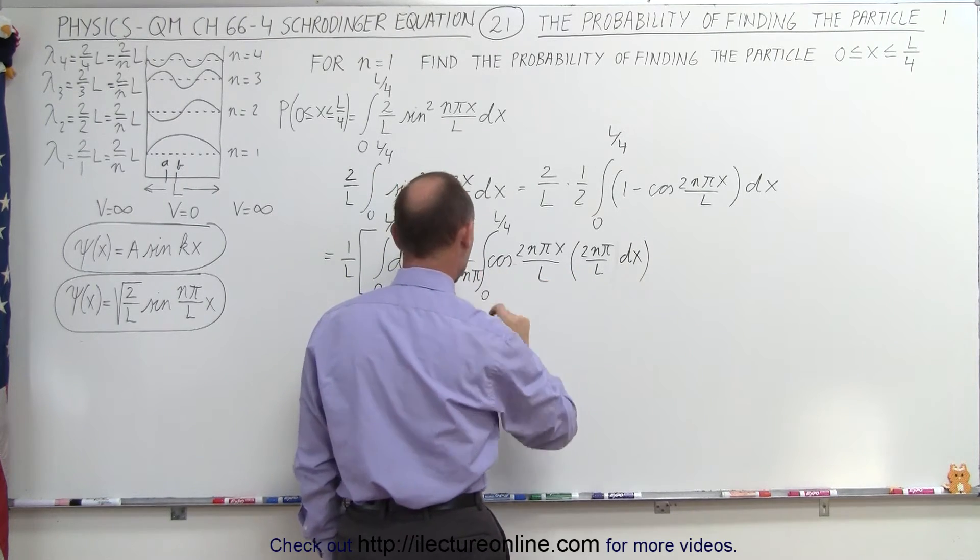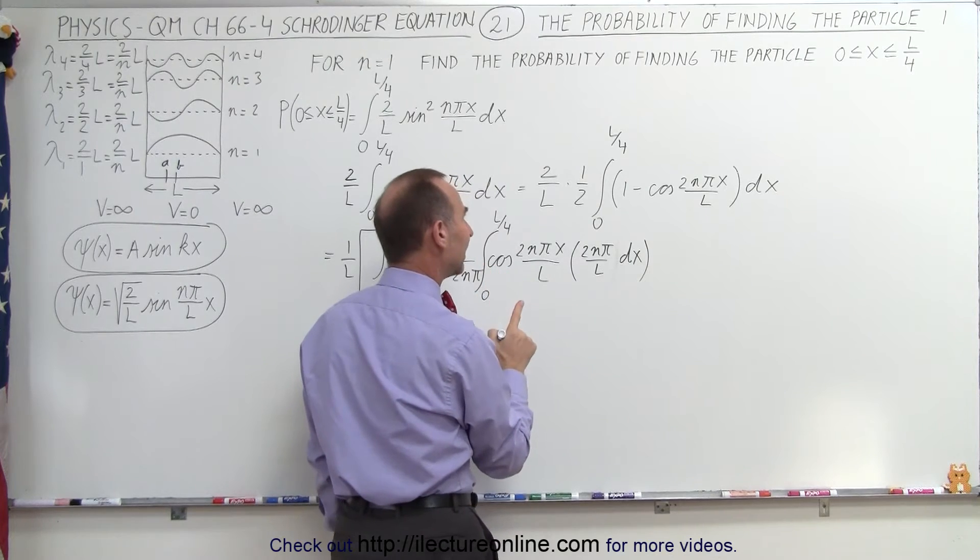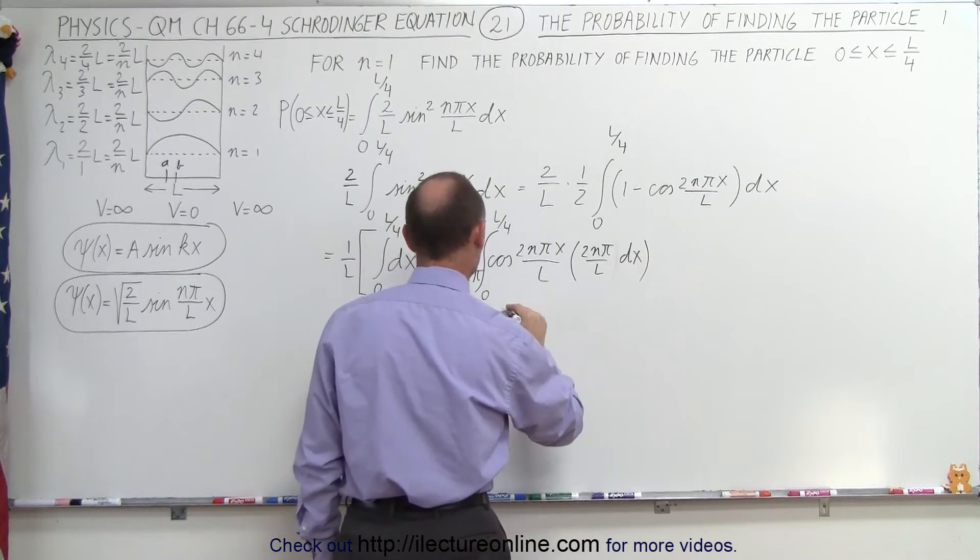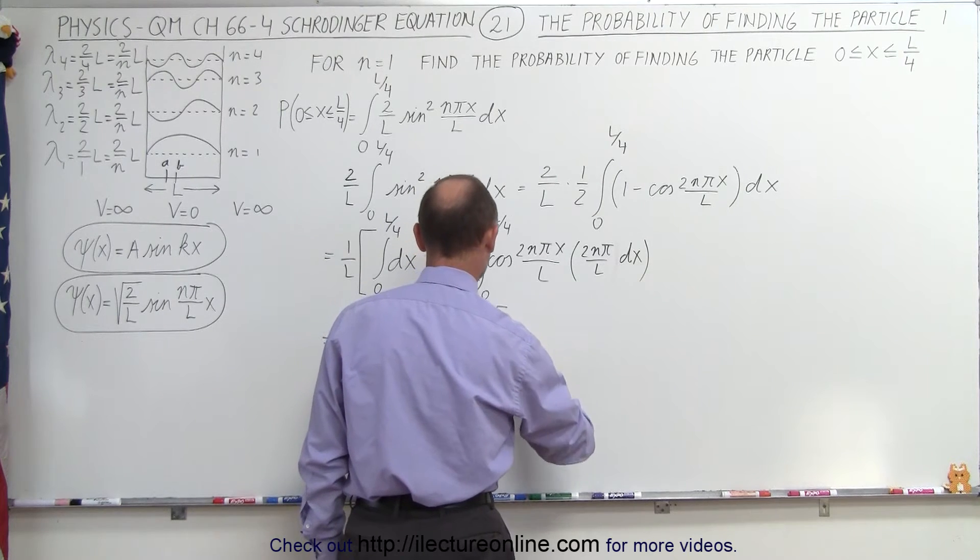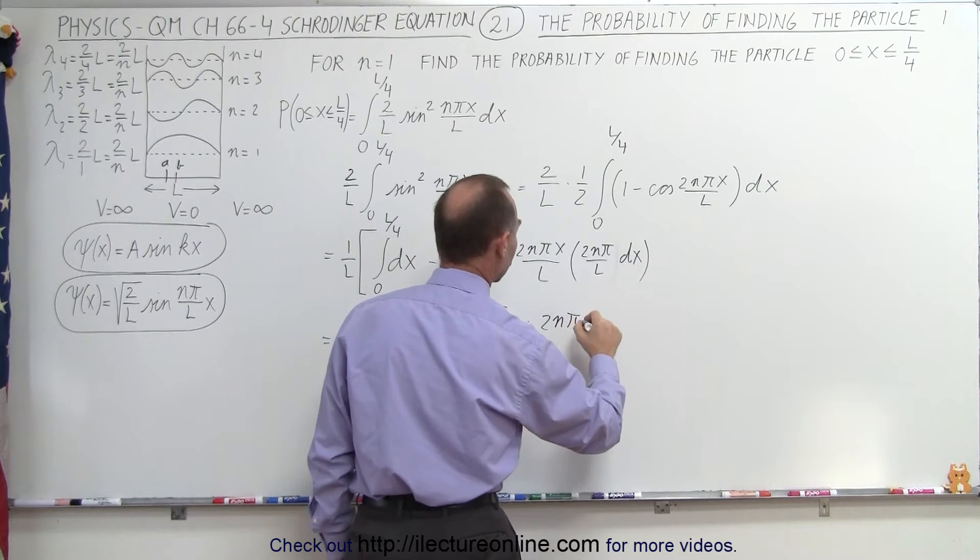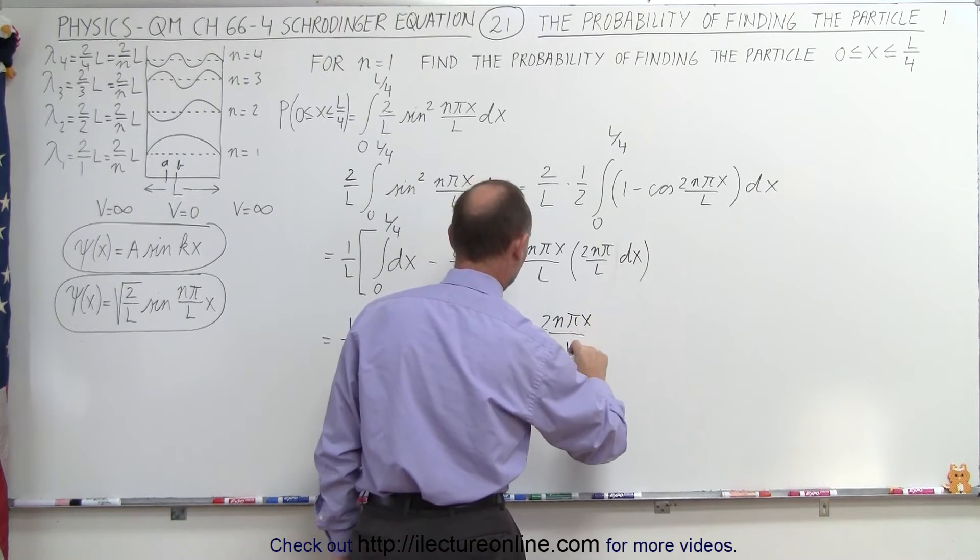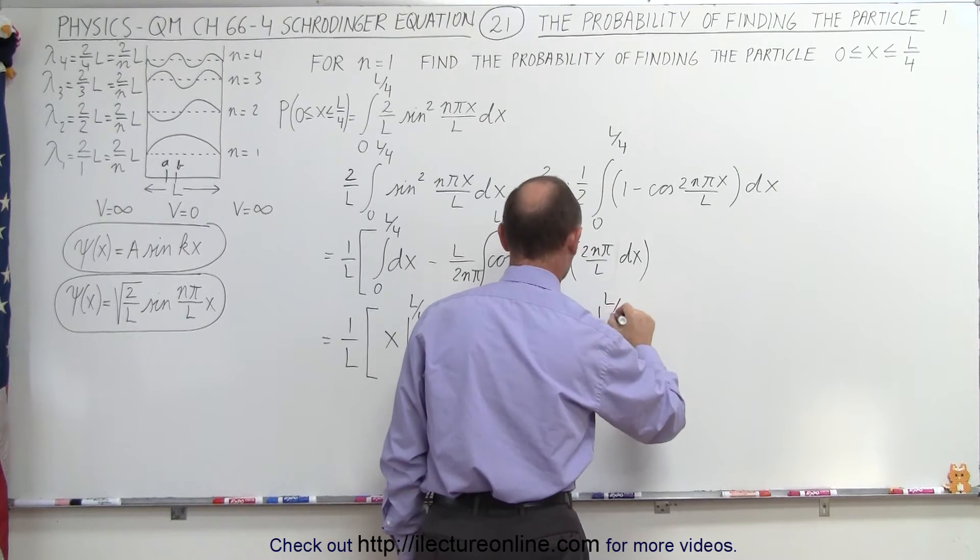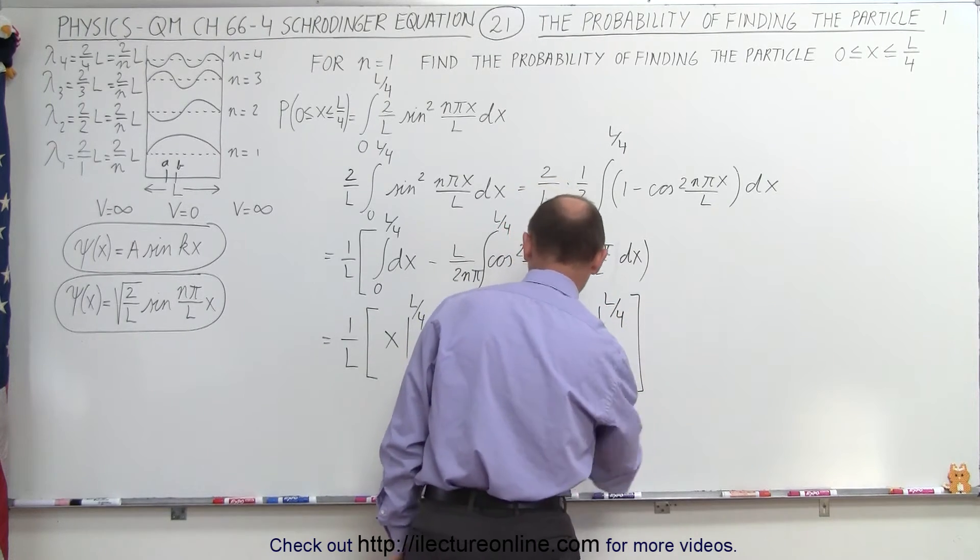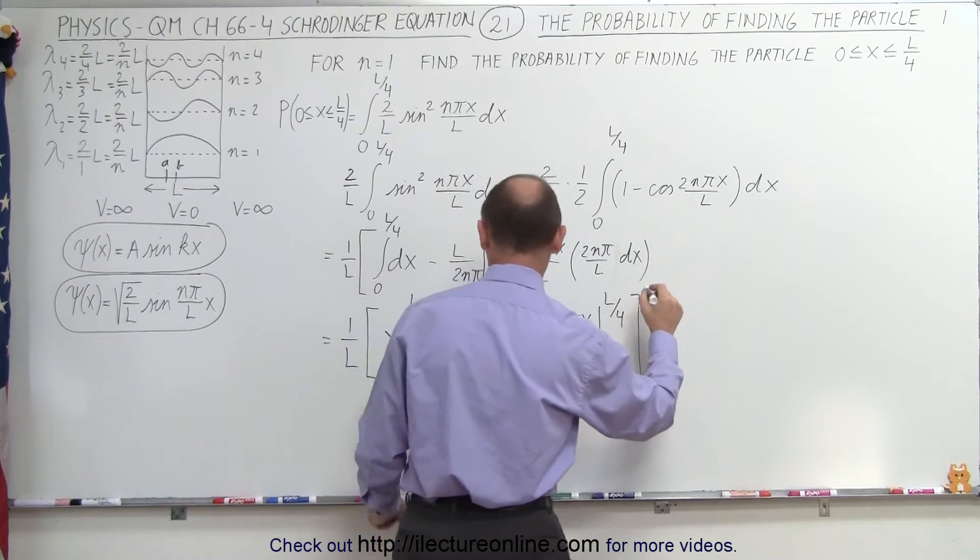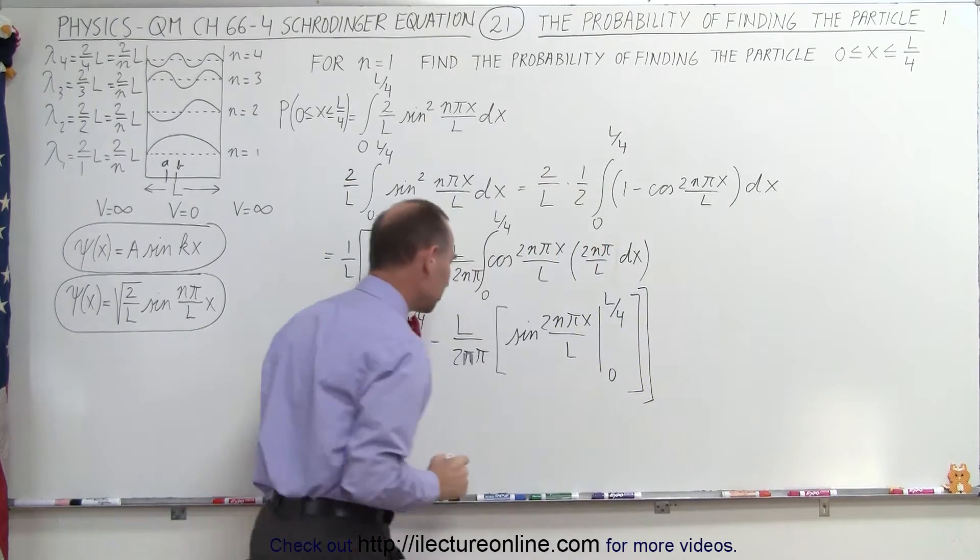And then here we have minus L over 2 n pi times the integral of this. Now, when we integrate that, we get the integral of the cosine is the sine, so we put in the sine of 2 n pi x over L, evaluated from 0 to L over 4, and then we close the brackets here. Let's see, we have this bracket closed, then we have one more bracket over here. All right, keep track of all the brackets.